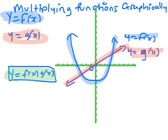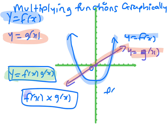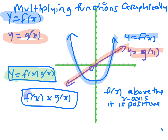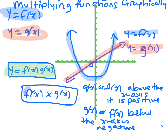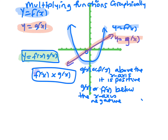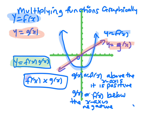When you multiply these two functions, you have to think about the signs of f of x times g of x. If f of x is above the x-axis, it is positive because it has a positive y-value. If any curve — f of x or g of x — is above the axis, it is positive, and if any of them are below the x-axis, they are negative. So when you're trying to figure out whether the result of multiplying them is positive or negative, you need to consider this.